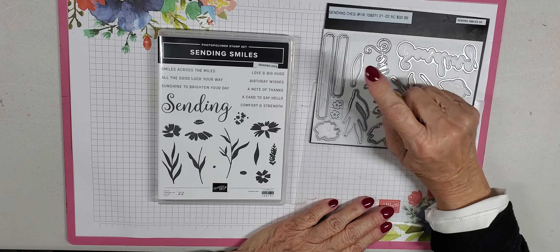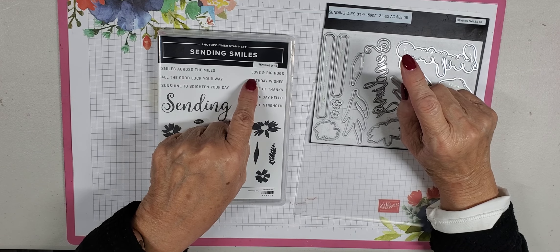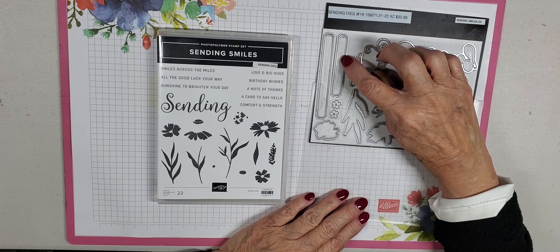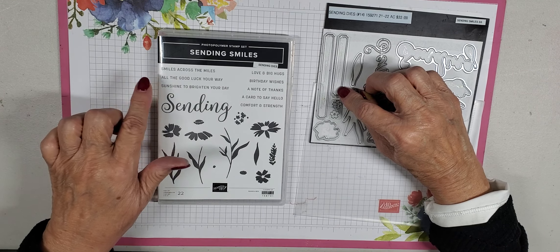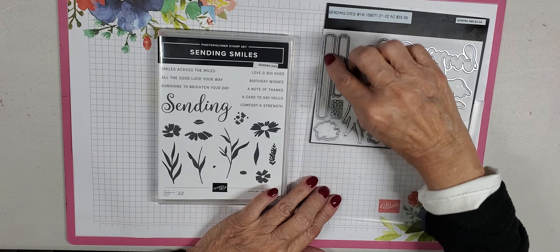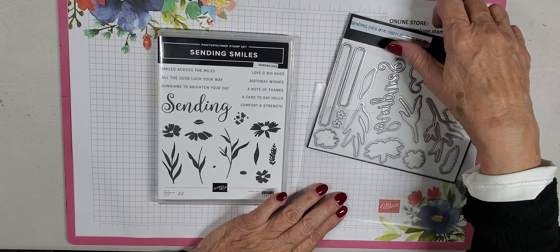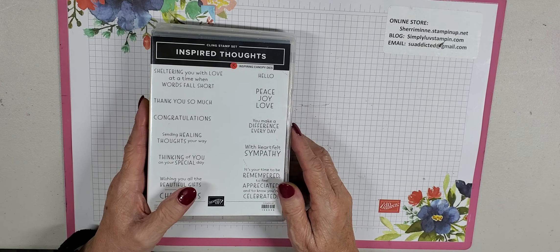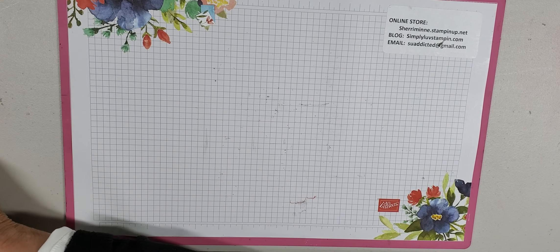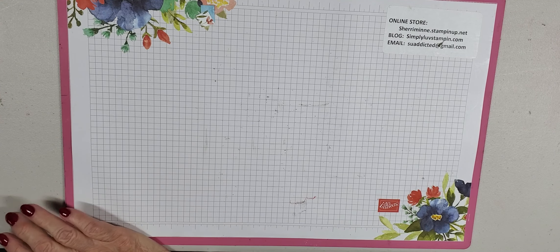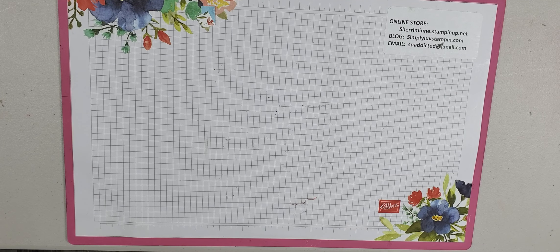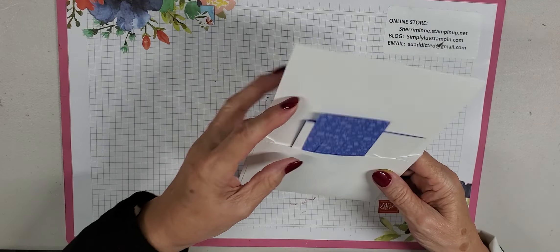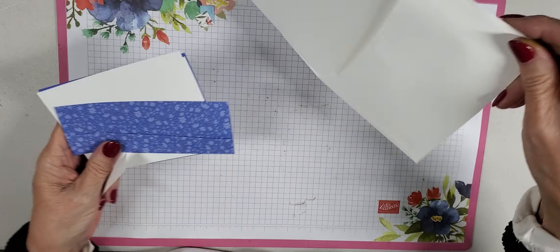Then we are using Sending Smiles. This is one of my most favorite stamp sets. I love the flowers. I love everything about it. And we're using the matching die. The only thing we're using the dies for is the sentiment. I am using one of the smaller sentiments, I think Birthday Wishes. So I used this small label frame. But if you wanted to use one of the other ones and make it a long, there's also a long one. And the inside sentiment comes from Inspired Thoughts.